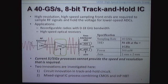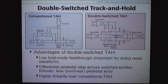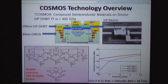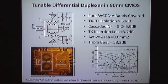The second project is run by Professor Jim Buckwalter, who is approaching a similar problem from a different track — looking at innovations in the track-and-hold circuit to achieve very high performance, high rate analog-to-digital conversion. This slide shows the conventional track-and-hold versus the double switch track-and-hold that Professor Buckwalter is working on. The technology they're going to use is a CoSMOS technology that merges compound semiconductor indium phosphide devices with CMOS.